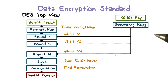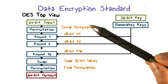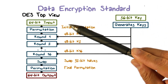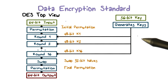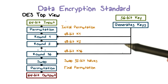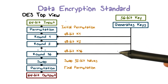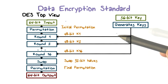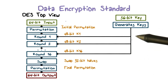The process of decryption with DES is essentially the same as the encryption process. Use the ciphertext as input to DES, but the subkeys are used in reverse order. That is, use K16 at the first round of decryption, K15 in the second round, and so on. For decryption, we run the same algorithm but only the keys in reverse order.